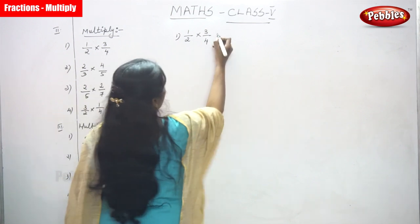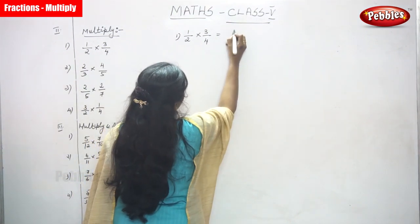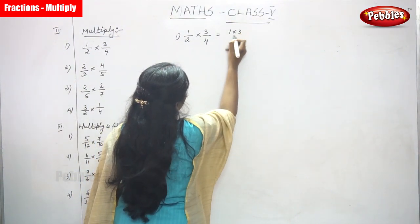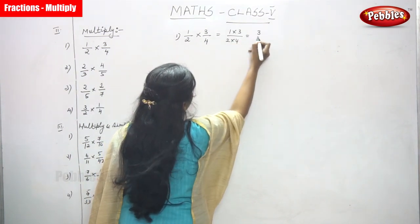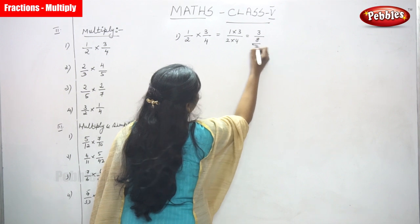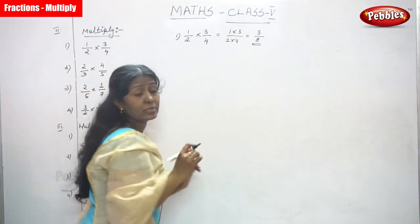Now, we are going to multiply 1 into 3 and 2 into 4. So, 1 into 3, 3. So, 2 into 4, what you will get? 8. So, 3 by 8 is the answer for this question.